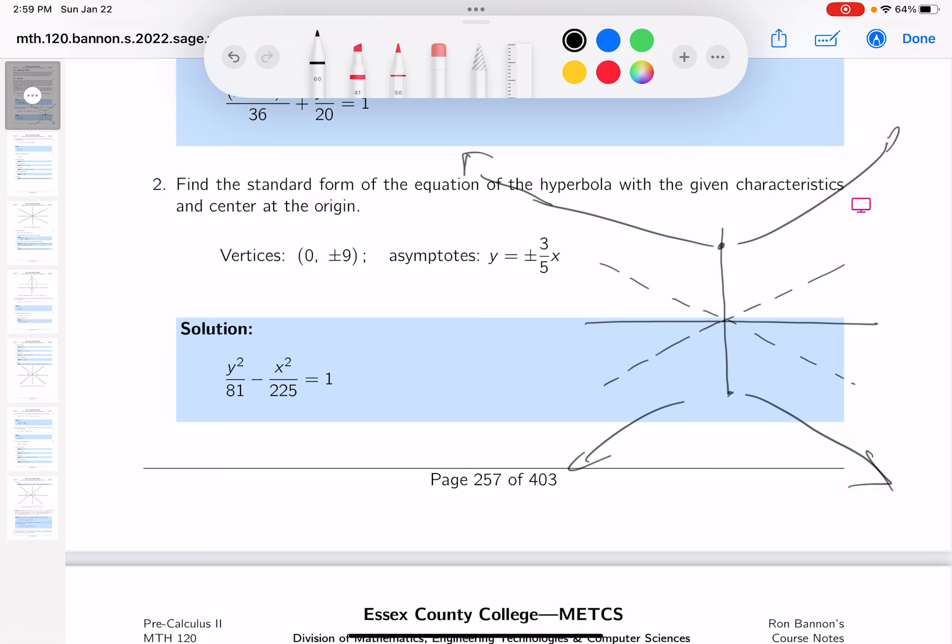Now let's write this down. So what are you going to put down? You're going to put y squared over something. Oh, I should point that out - the center is zero, zero. Let's see, minus x squared over something, and that would equal one.